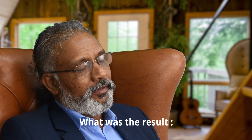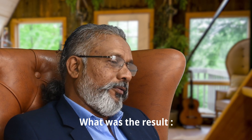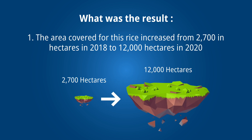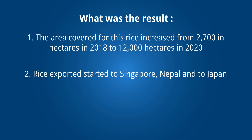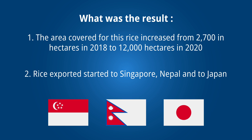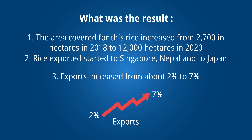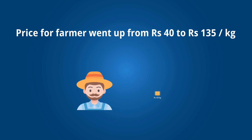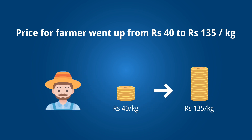The results were what I would call miraculous. In 2018, only about 2,700 hectares were under production — that increased drastically to 12,000 hectares. Rice exports started going to Singapore, Nepal, and Japan. Export share increased from about 2% to 7% — and remember, 2% to 7% is not a small number, it is a huge jump. Vietnam, Cambodia, and Korea are all being considered for export and are in discussion. Most importantly, the farmer who was getting 40 rupees per kg is now getting 134 rupees per kg — becoming richer and contributing to a much healthier ecosystem.